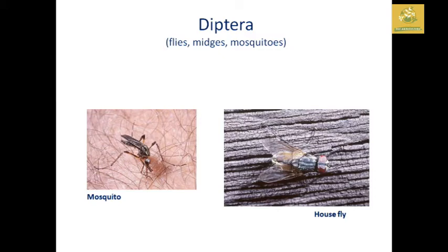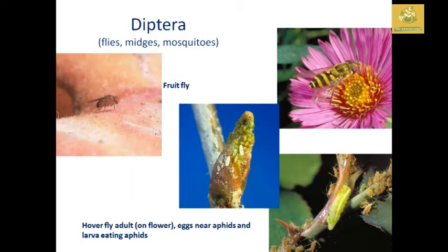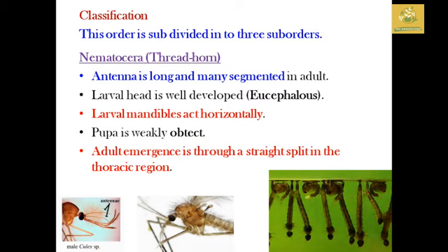In Diptera, the common names — flies, midges, and mosquitoes — are present in this group of insects. The hoverfly adult feeds on flowers, and their larvae eat aphids in this particular group of insects.